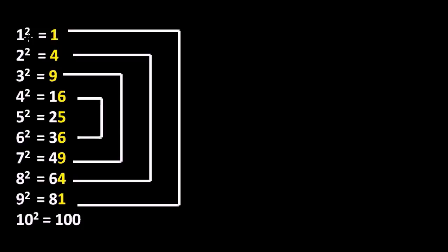The unit place of 1 squared is 1, 2 squared is 4, 3 squared is 9, 4 squared is 6, 5 squared is 5, 6 squared is 6. Now you can see there is one pair — for 7 squared the unit digit is 9. So again for 8 squared it is 2, and for 9 squared the unit place is 1. So we have pairs: 1 and 9, 2 and 8, 3 and 7, 4 and 6, and 5 alone. We have to use this logic for determining the square root of any number.